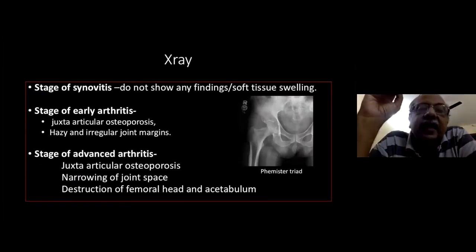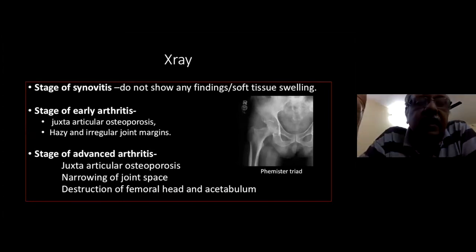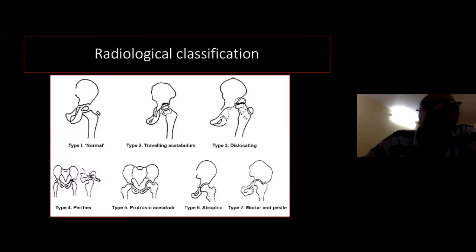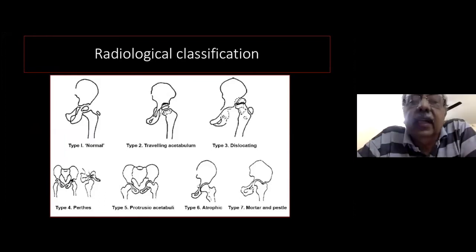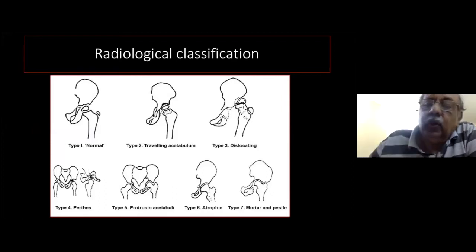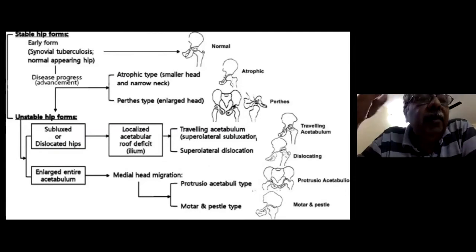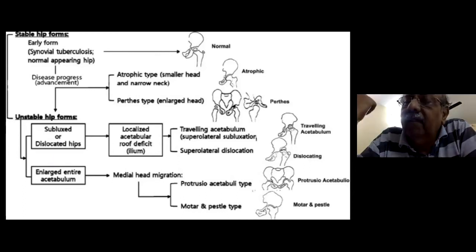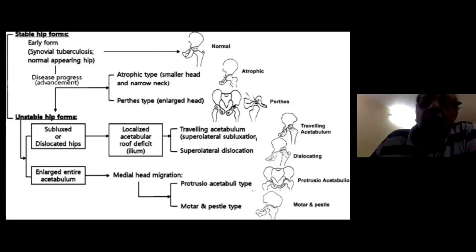X-ray findings depend on the stage. In synovitis, there may be no findings. In early arthritis, there is periarticular osteoporosis and hazy, irregular joint margins. In advanced arthritis, the famous triad appears: periarticular osteoporosis, narrowing of the joint space, and peripheral destruction of the femoral head and acetabulum. Shanmugasundaram classified the condition into seven radiological types: normal hip, wandering acetabulum, dislocating type, Perthes-like, protrusio acetabuli, atrophic type, and mortar-and-pestle type — further divided into stable (normal, atrophic, Perthes) and unstable (wandering acetabulum, dislocating, protrusio, mortar-and-pestle) hips.